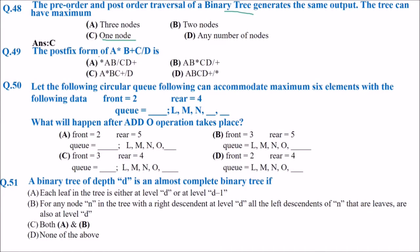The postfix form of the expression A × (B + C) / D: you make an expression tree and formulate the postfix. The root is taken last. The answer is: AB + CD÷ × — that is, A B plus C D divide and star (multiply).